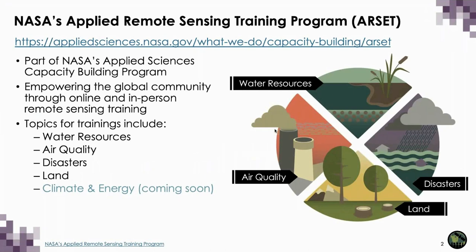For those unfamiliar with the Applied Remote Sensing Training Program, or RSET, it is part of NASA's Applied Sciences Capacity Building Program. RSET provides accessible, relevant, and cost-free training on remote sensing satellites, sensors, methods, tools, and applications. Trainings are offered online and in-person for beginners and advanced practitioners alike.